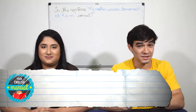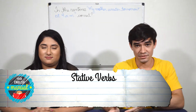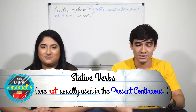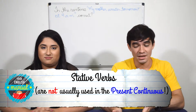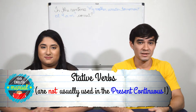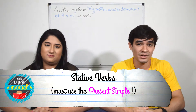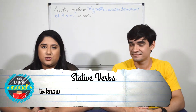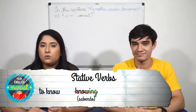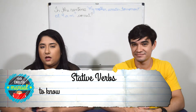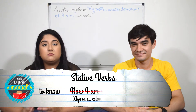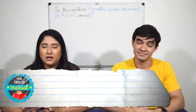But what happens is that some verbs, called stative verbs, are not usually used with the -ing suffix. So, they are not usually used in the present continuous. Therefore, even though we are talking about something that is happening now, we must use the present simple with those verbs. A common example is the verb 'to know.' You are most likely never going to hear 'knowing' in English, even though 'sabendo' exists in Portuguese. So we don't say 'now I am knowing' — we simply say 'now I know.' We're going to talk more about this topic in our video about the present continuous.